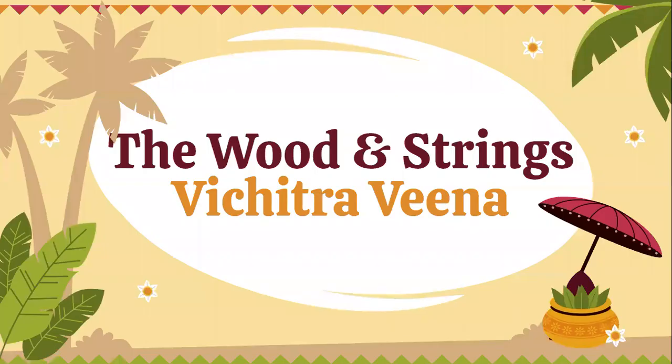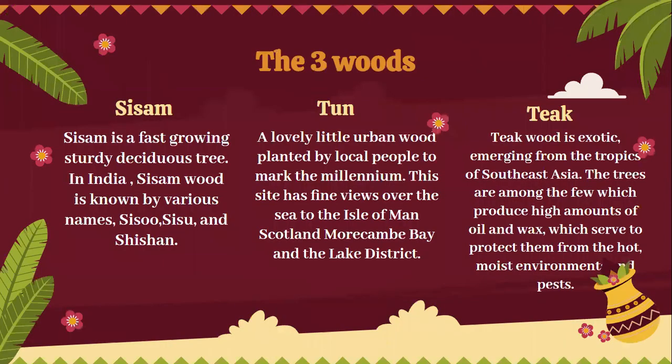The wooden strings of the Vichitra Veena: One of the woods used is Sissam. Sissam is a fast-growing, sturdy tree found in India. Sissam wood is known by various names — Sissu and Shishan.